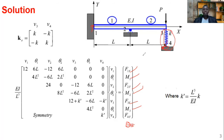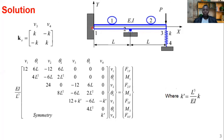Now we apply boundary conditions to get the reduced finite element equation. At the fixed end, v1 equals zero and theta1 equals zero. At the hinge, rotation is free but there is no vertical movement, so v2 equals zero. The spring end is fixed at the wall, so v4 equals zero. Node three is free to move vertically with the spring providing a restoring force.